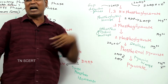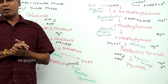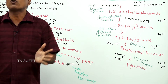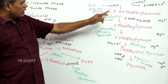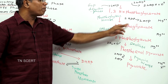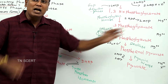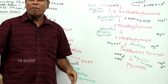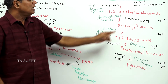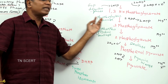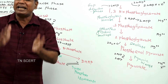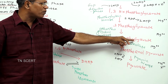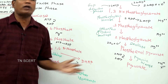1,3-bisphosphoglycerate is dephosphorylated to form 3-phosphoglycerate, with the help of the enzyme phosphoglycerate kinase. 3-phosphoglycerate is then converted into 2-phosphoglycerate with the help of phosphoglycerate mutase.